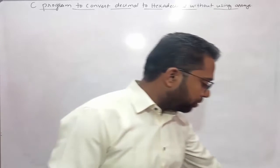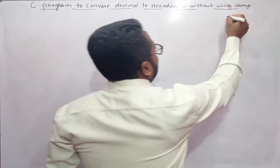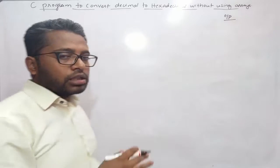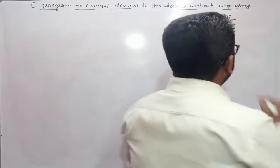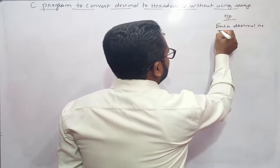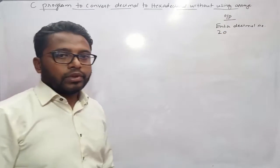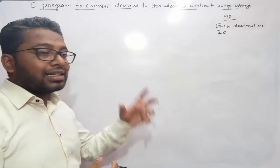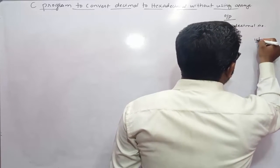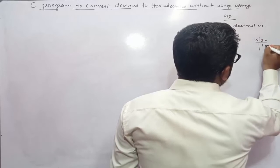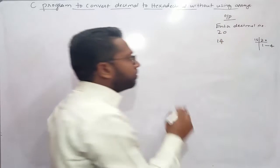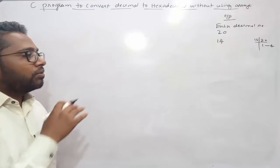Now let us start our discussion. Let me first write the output of this program. When this program gets executed it will ask the user to enter a decimal number. Suppose the user enters 20. To find the hexadecimal equivalent of 20, we divide by 16. 16 ones are 16 and we're left with 4, so the hexadecimal equivalent is 14.